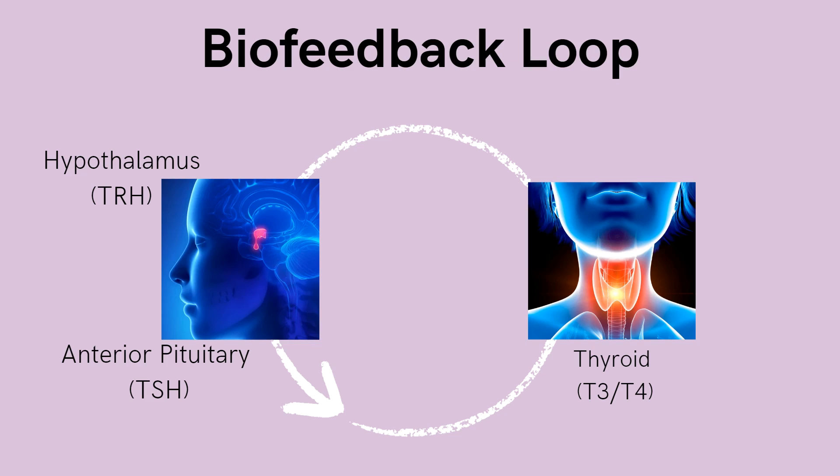And so to recap, an increase in T3 and T4 should cause a decrease in the release of TSH, because the thyroid does not need to be stimulated anymore. And to flip that, a decrease in T3 and T4 should cause an increase in the release of TSH to tell the body to make more.